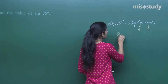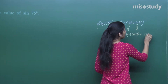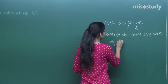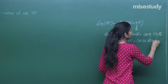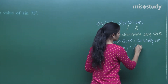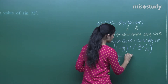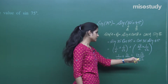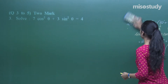Using the formula sin(A + B) = sin A cos B + cos A sin B, we get sin 30 · cos 45 + cos 30 · sin 45. That is (1/2)(1/√2) + (√3/2)(1/√2). Taking LCM as 2√2, the answer is (1 + √3) / (2√2). So sin 75 = (1 + √3) / (2√2).